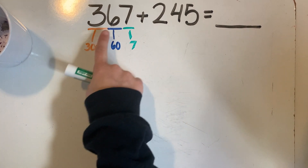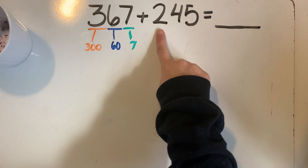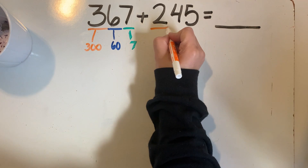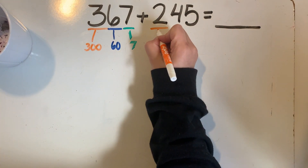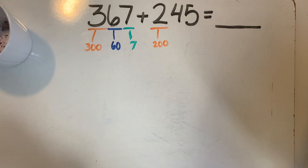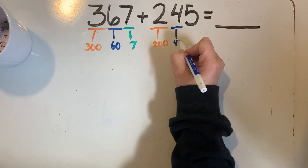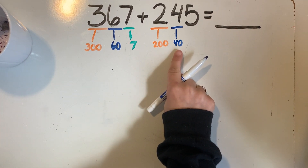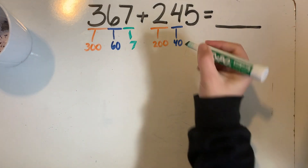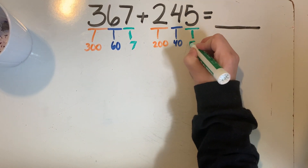I've broken apart this first addend by place value. Now I can move to my second addend, 245. I'll start again at my hundreds place. This two is telling me I have two groups of 100, and two groups of 100 is 200. This four is in my tens place, telling me I have four groups of 10. Four groups of 10 is 40. And this five is telling me that I have five groups of one.